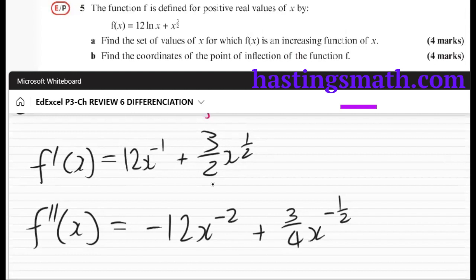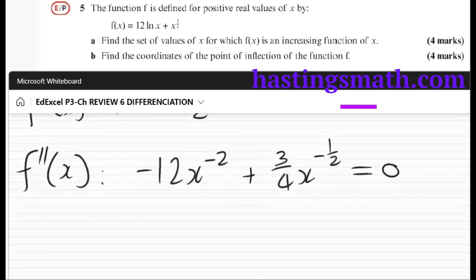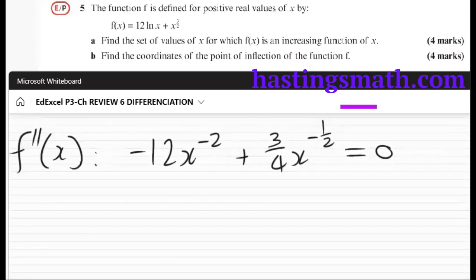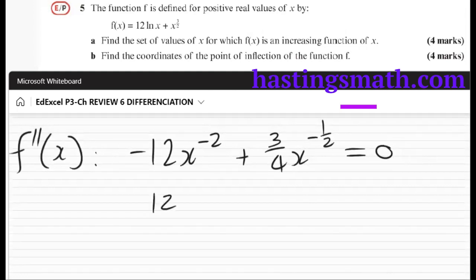Okay, so this is our f''(x). And we want where this is equal to zero. So a little bit of simplification. I'm going to keep it in the same order, so we could say 12 over x squared, that x to the minus two is positive in the denominator, is equal to 3/4 x to the a half. Okay, just putting it all positive.